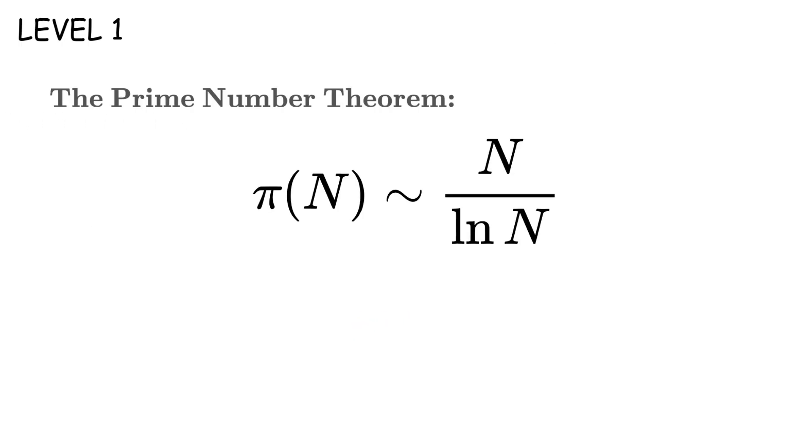The prime number theorem tells us that the number of primes less than n is approximately n divided by the natural logarithm of n. So there are roughly 50 million primes less than 1 billion.